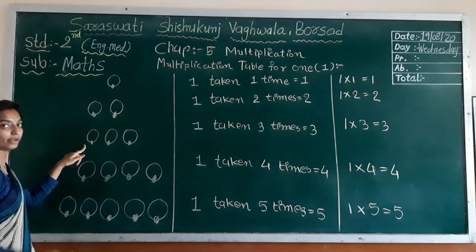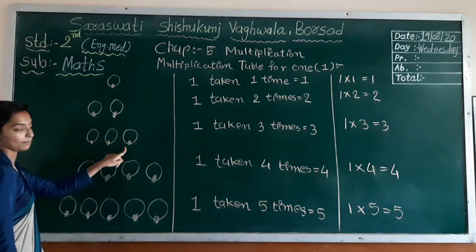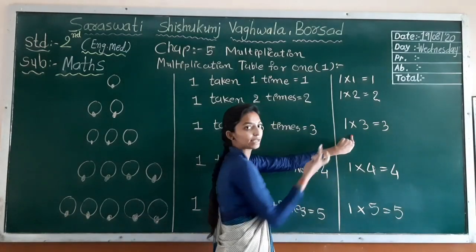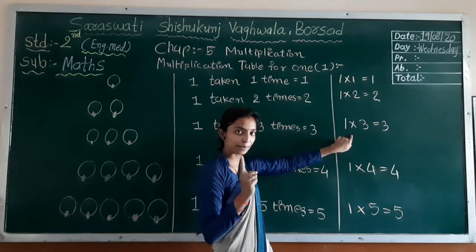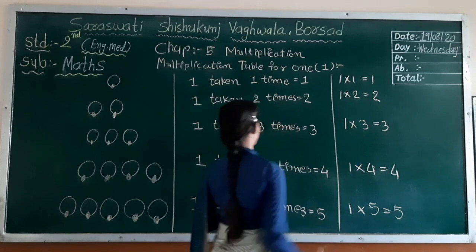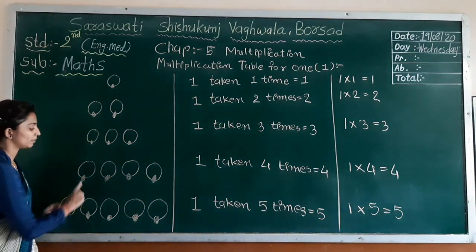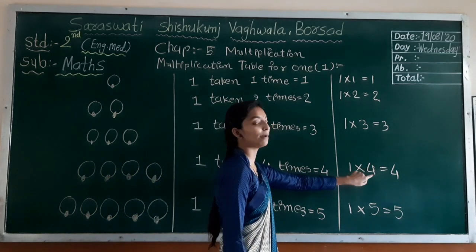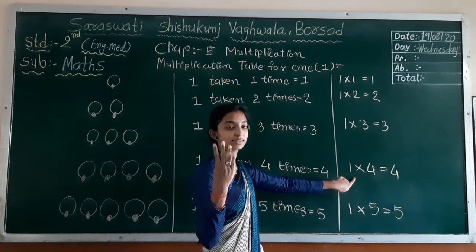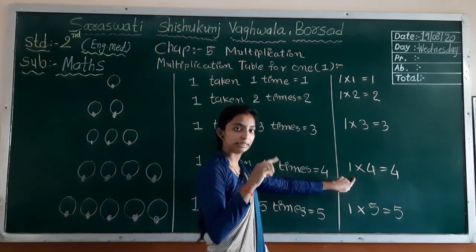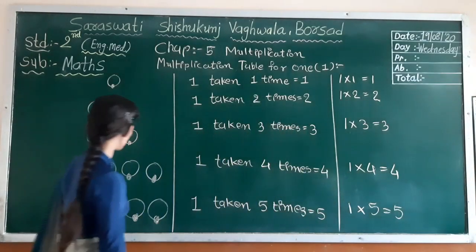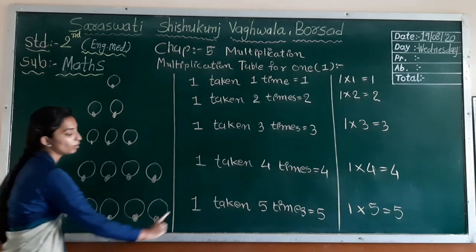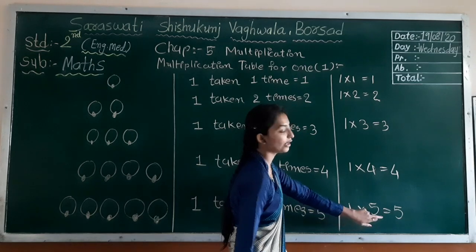One multiplied by three times. So one multiplied by three — here one of them taken three times, so we multiply. Because one is repeated, one multiplied by three equal to three. In four, one taken four times, so one multiplied by four equal to four — because one of them taken four times, repeated addition. One taken five times, so one multiplied by five equal to five.